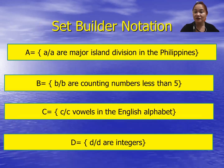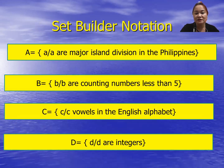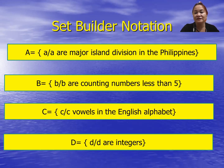Next, we have the set builder notation — a combination of the rule method and the roster method. The set is named by any capital letter, enclosed with an equal sign and braces. For example, A equals the set of all a such that a are major island divisions in the Philippines. For set B, using set builder notation: B is the set of all b such that b are counting numbers less than 5.